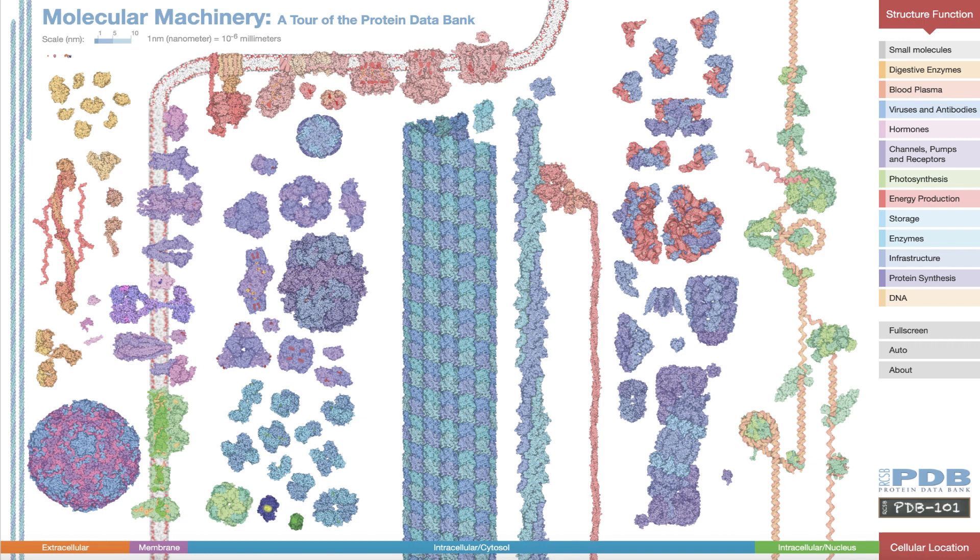Illustrations of these structures are drawn to scale with a scale bar providing a sense of molecular size in nanometers. The structures are organized in categories related to function and location in the cell.